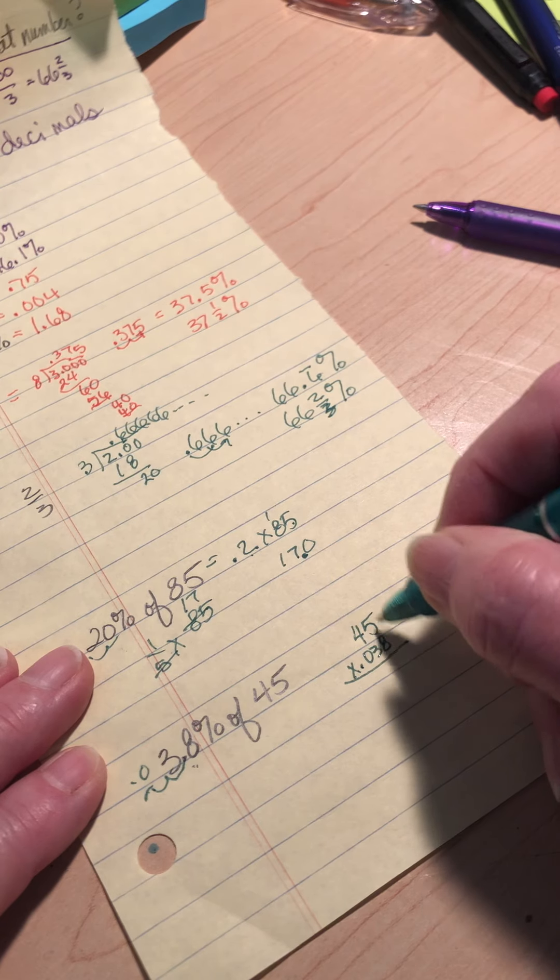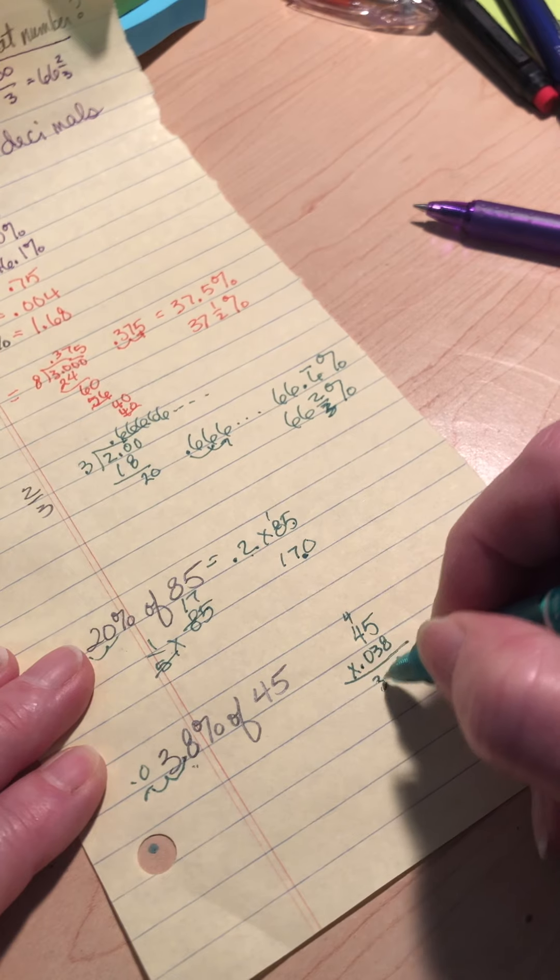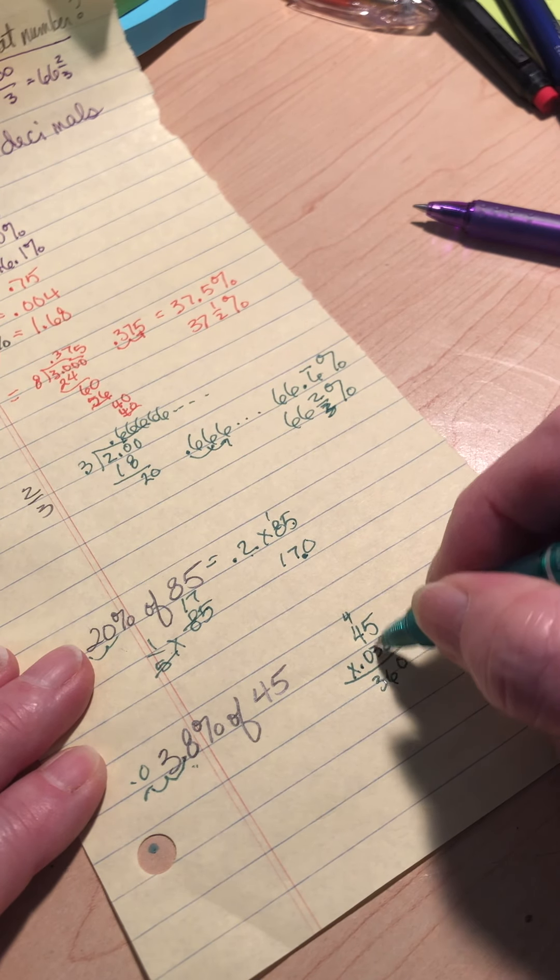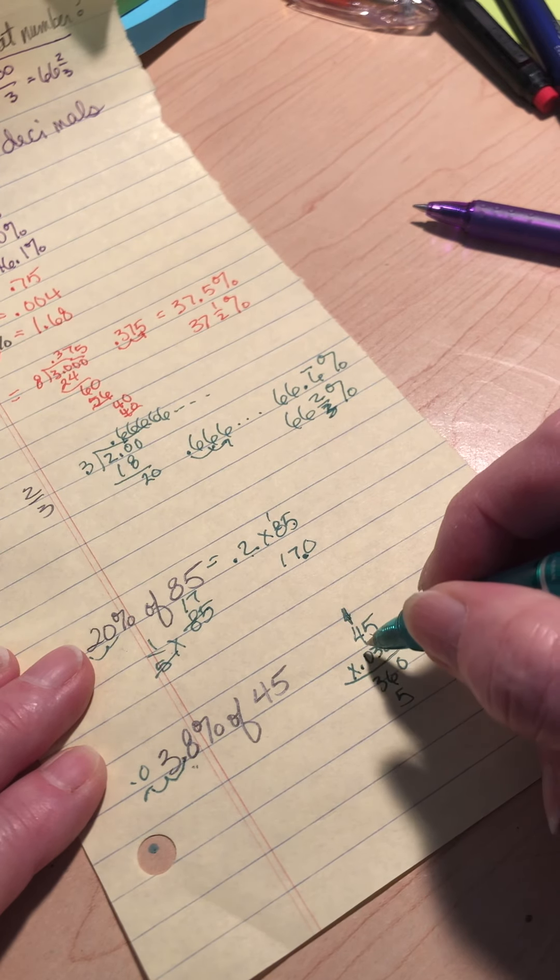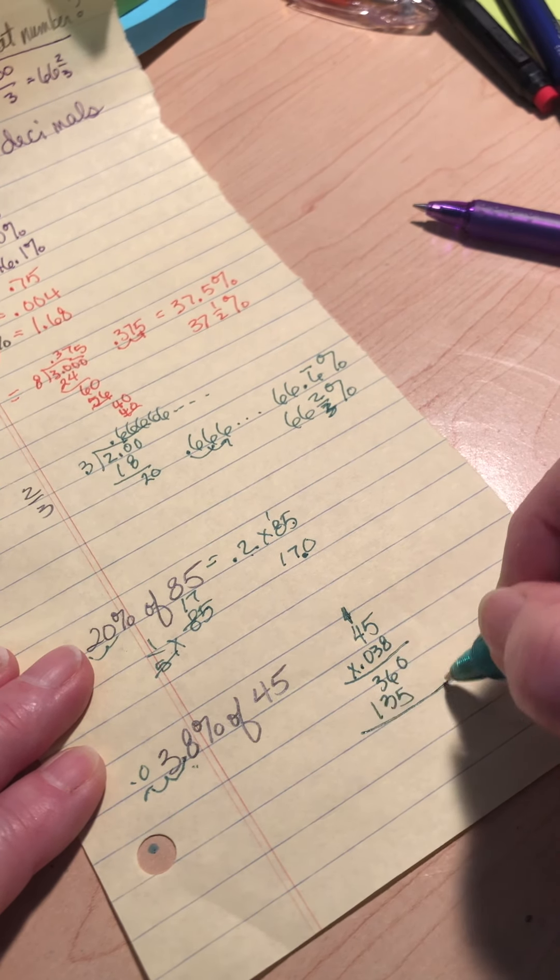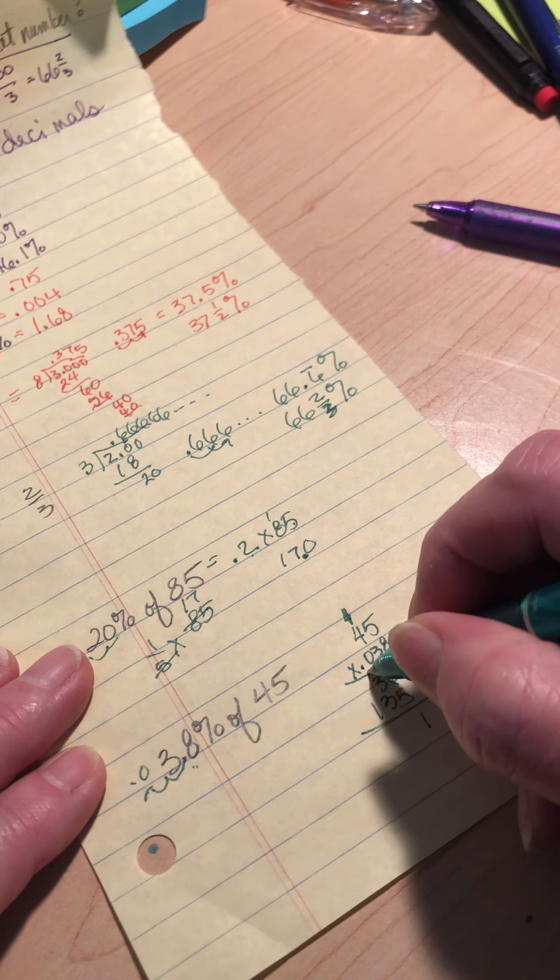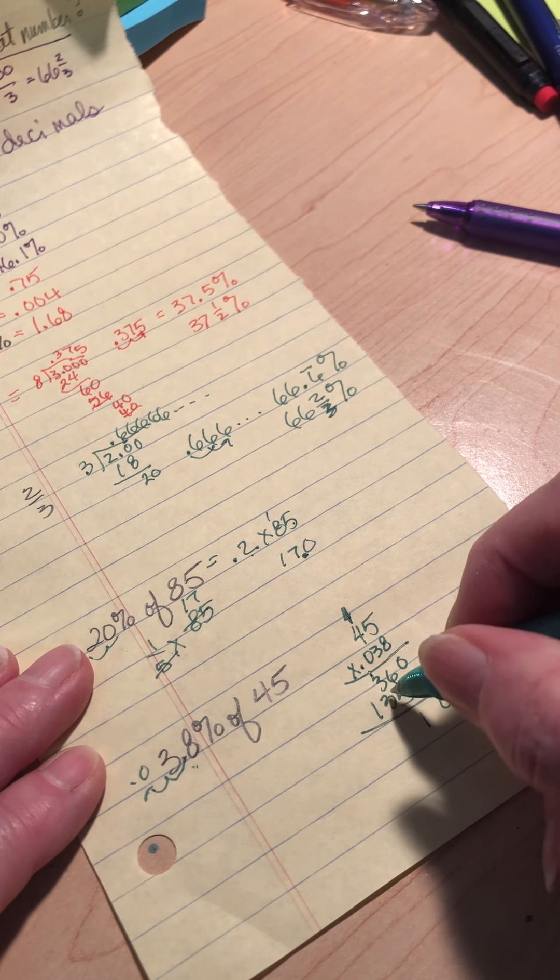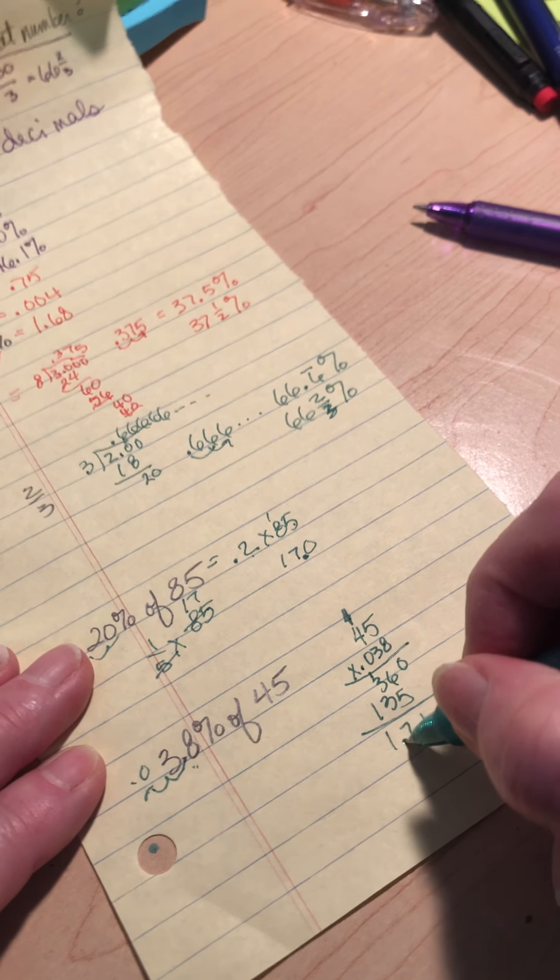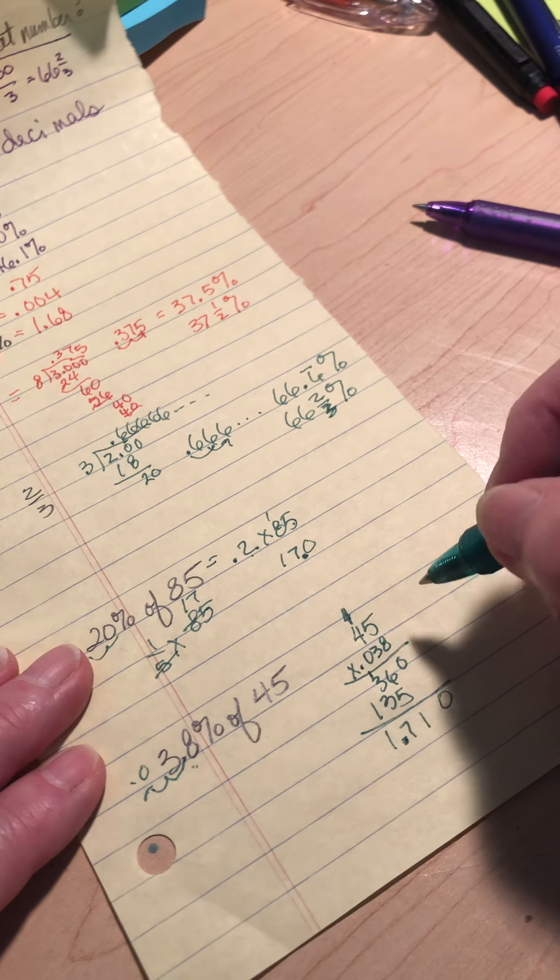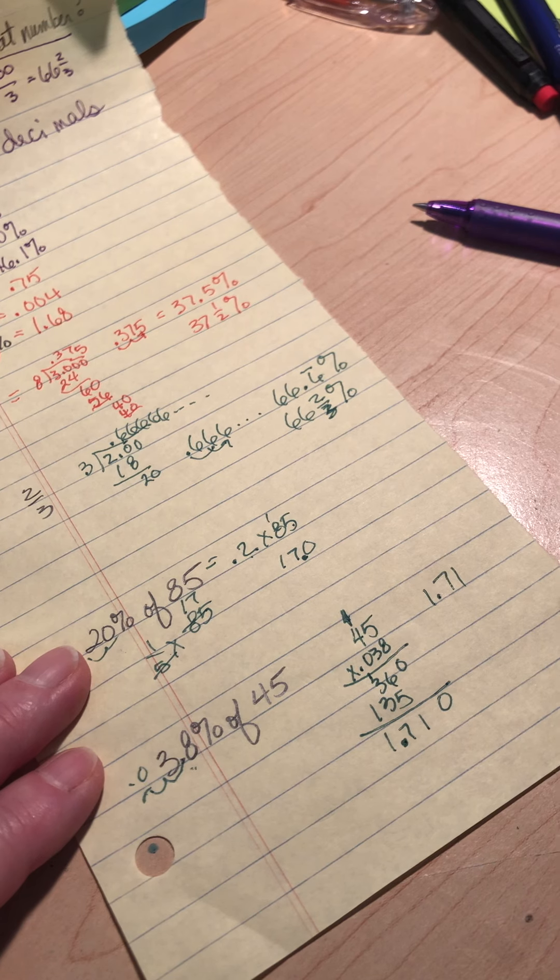Multiply by 8. 8 times 5 is 40. Carry the 4. 8 times 4 is 32. 36. 3 times 5 is 15. Carry the 1. 3 times 4 is 12. 13. I do not need to put a row of 0s. They do not help me at all. 3, 3, 6, 7, 1. I need 3 decimal places. So my answer is 1.71. You do not have to put that last 0.